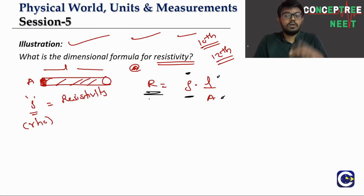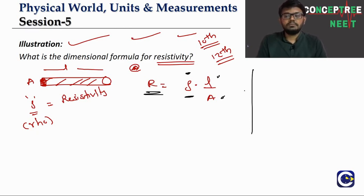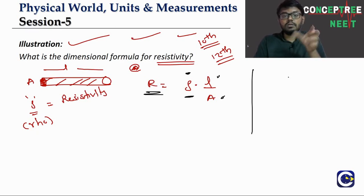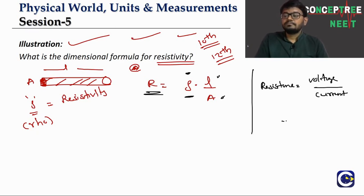In Session 4 we solved the dimensional formula of resistance. If you remember it, good — you can substitute directly. If not, we can quickly derive it. Resistance is voltage divided by current. Voltage (potential difference) is energy or work done divided by charge.